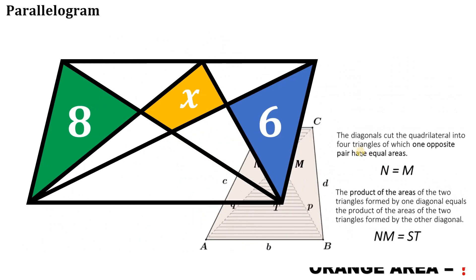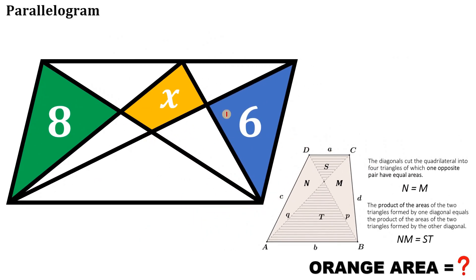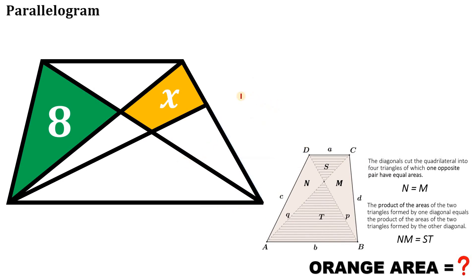Let's begin. You might wonder where the trapezoid is since we see a parallelogram. Here's the trapezoid. It follows that the green region of area 8 is equal to another region, which we call x. Therefore, the white triangle must equal 8 minus x. When we add x and 8 minus x, this gives us 8.